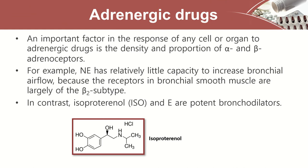An important factor in the response of any cell or organ to adrenergic drugs is the density and proportion of alpha and beta adrenoceptors. For example, norepinephrine has relatively little capacity to increase bronchial airflow because the receptors in the bronchial smooth muscle are largely of the beta-2 subtype. In contrast, isoproterenol and epinephrine are potent bronchodilators. The important point is that we're looking at the density and proportion of alpha and beta adrenoceptors as related to which drugs and their target organs.